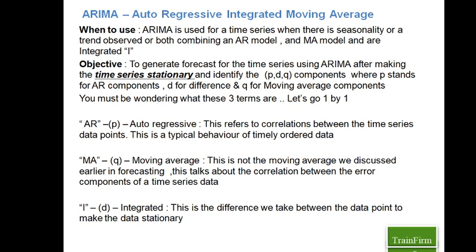Some events during a time period may influence the next data point in the series because of the impact that event made on that data point — this is how correlation gets built. That's called AR(P), where there is a correlation between data points in a time series. We are trying to learn the degree of correlation and where exactly the correlation exists — whether it's between subsequent data points or from one data point to another three time periods ahead.